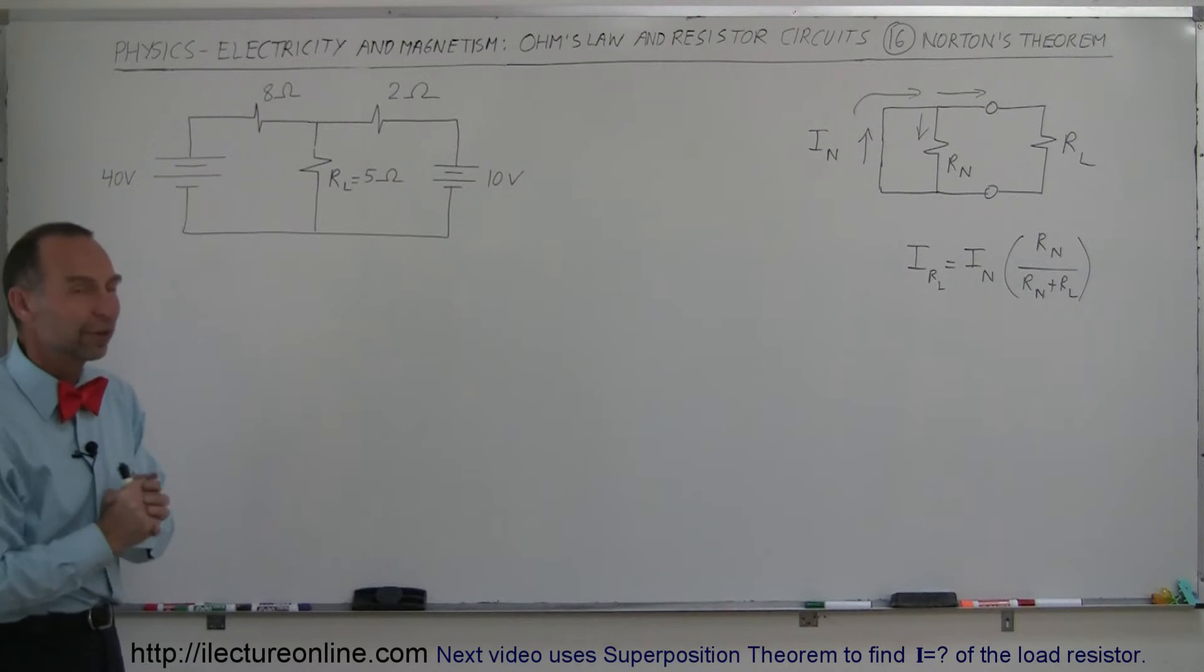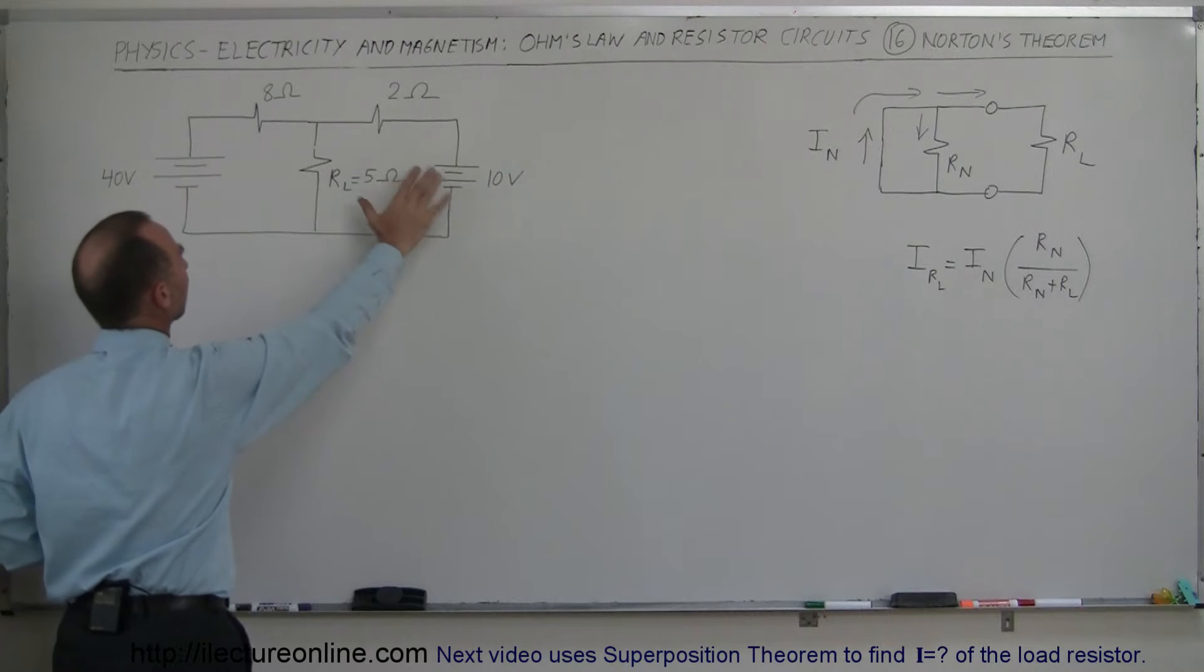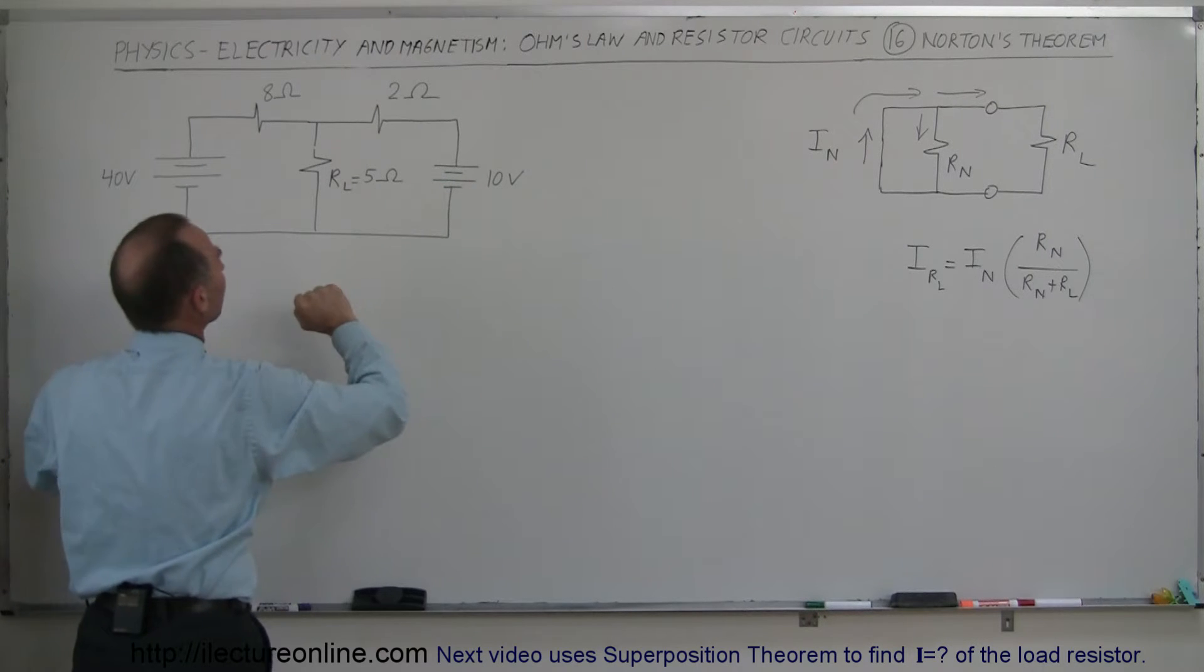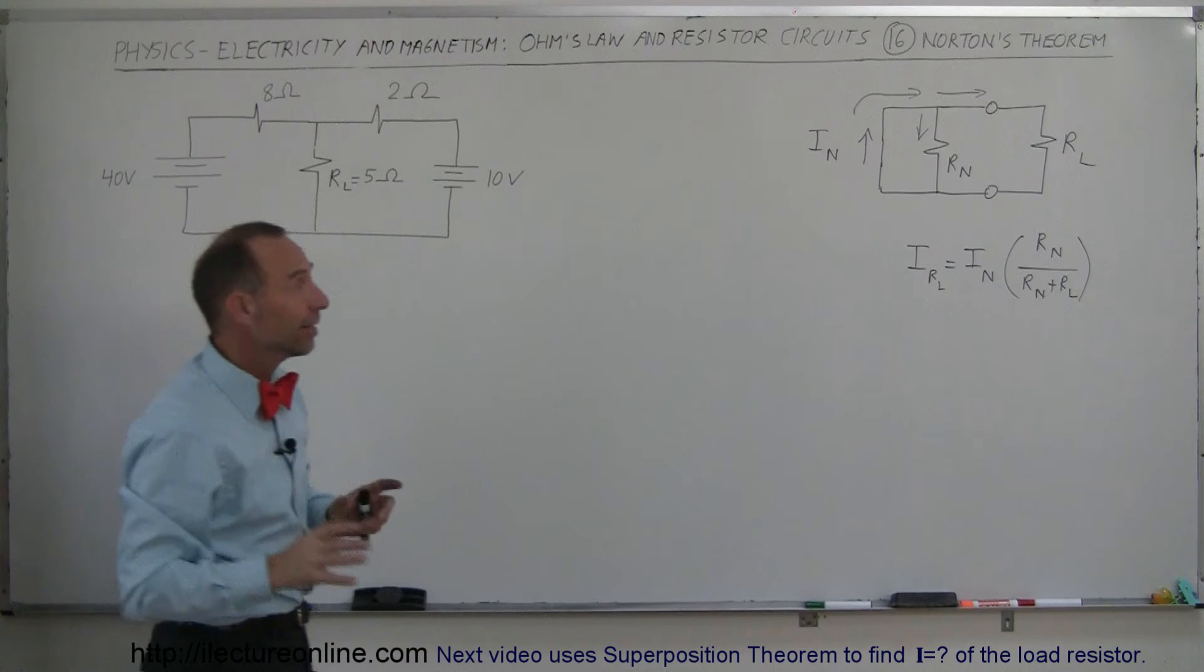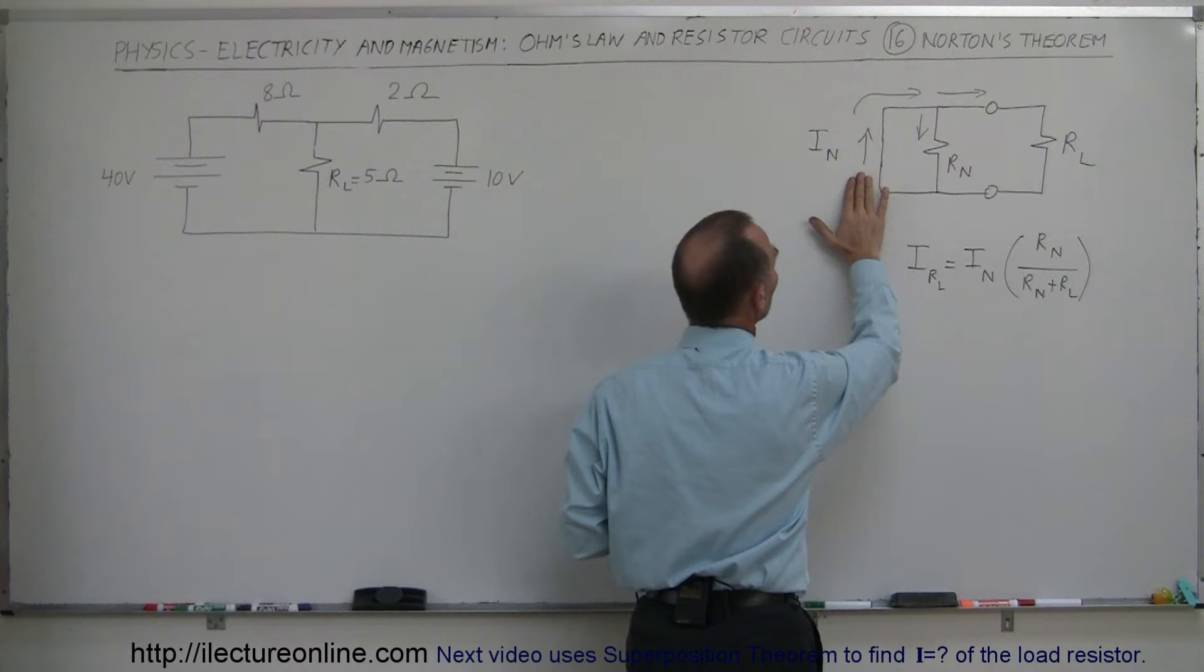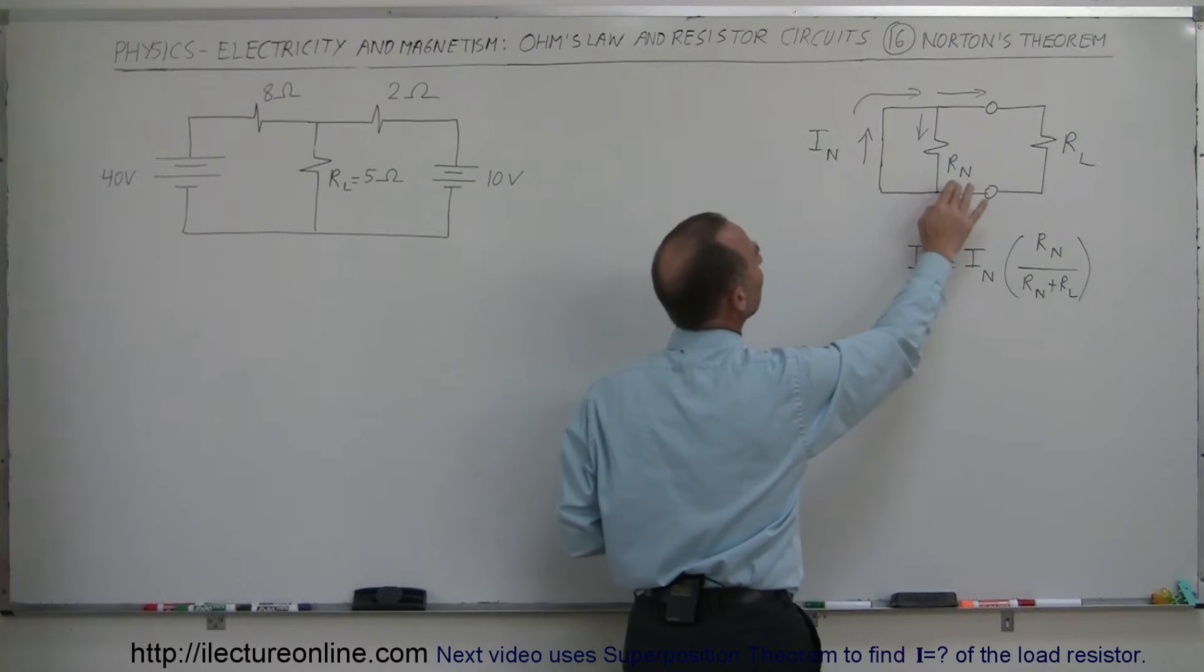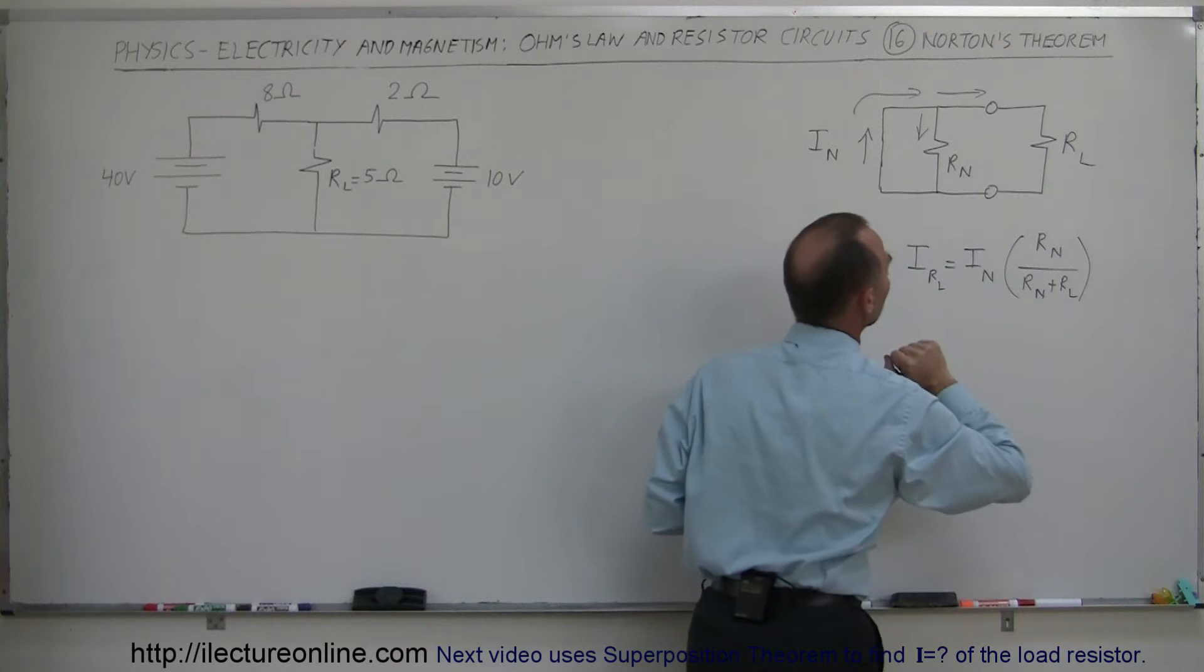Now we're going to talk about Norton's Theorem. Norton came up with a great idea where we can take a complicated circuit like this with multiple voltage sources and try to figure out the current through the load resistance by setting up what we call an equivalent Norton circuit, where we know the total current in the circuit and we know the Norton resistance, which is then put in parallel to the load resistor.